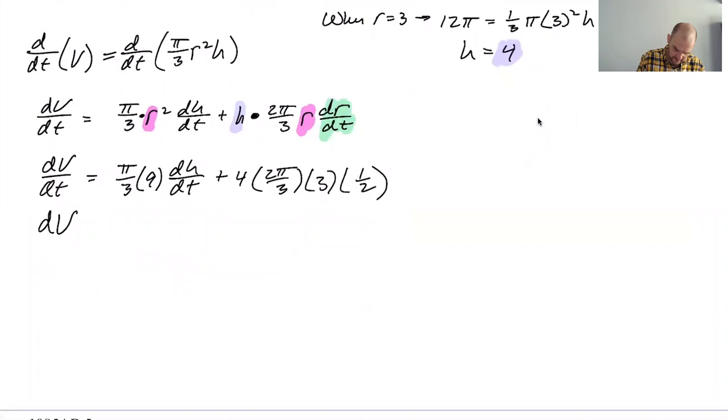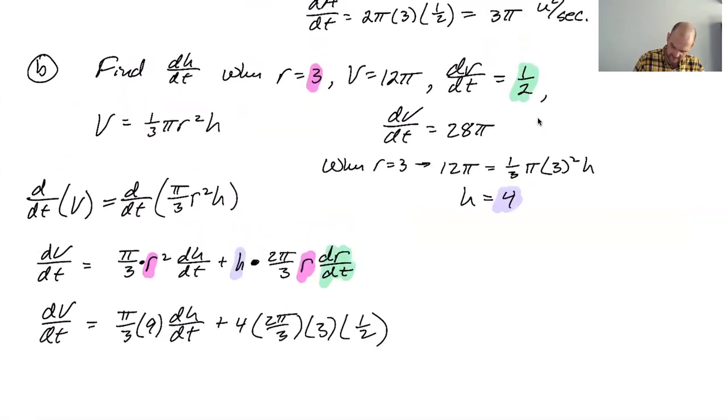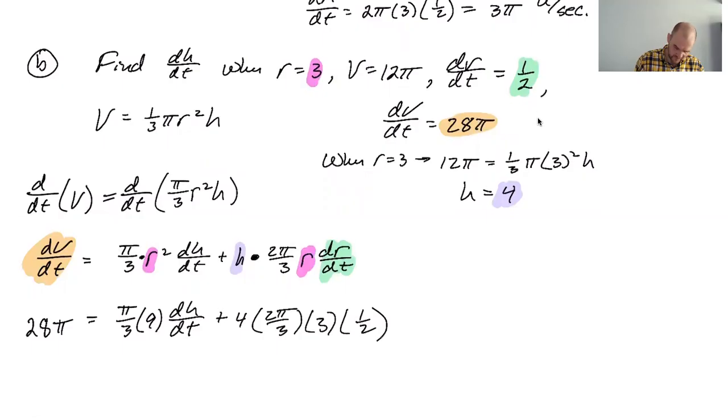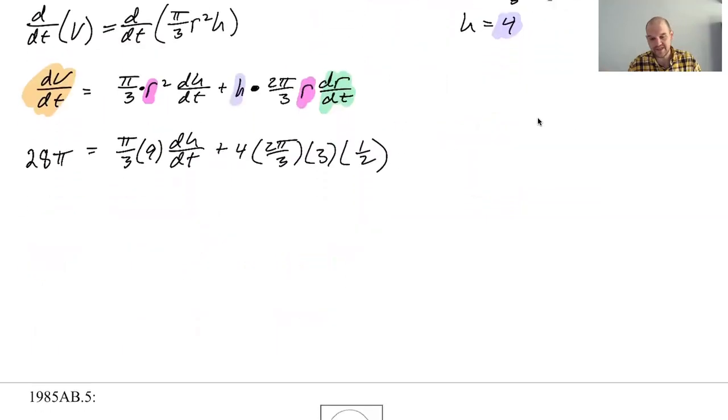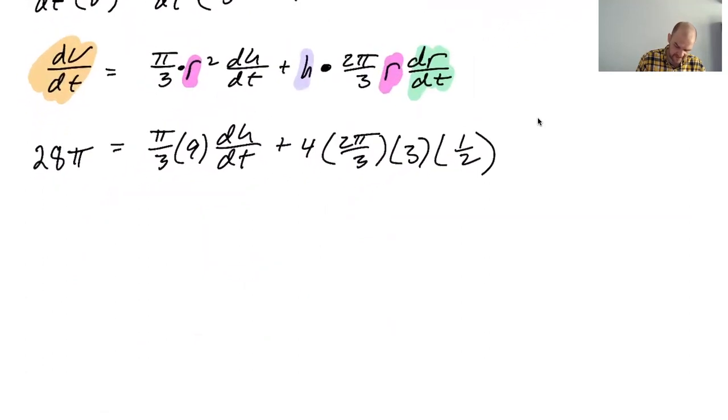All right, so then dv/dt is three. No, dv/dt was given. What am I doing? I should have highlighted something there. Let's go back and highlight something. Did I write dv/dt? Oh, I did. dv/dt is this. So you can go away and you can become 28 pi. The nice thing about showing all your work, let me justify this. The nice thing about showing all your work is when you mess up, it's pretty easy to see where you messed up. Like you can just go back and easily correct it.